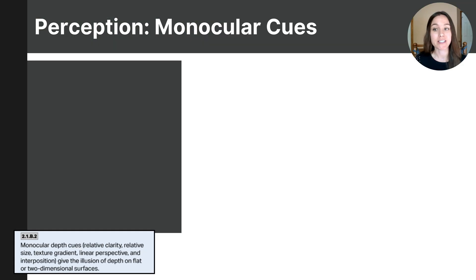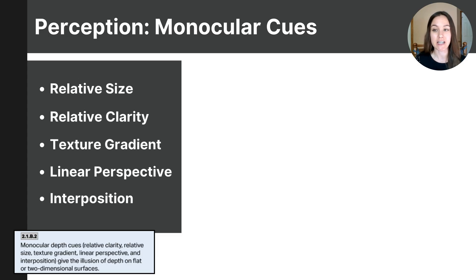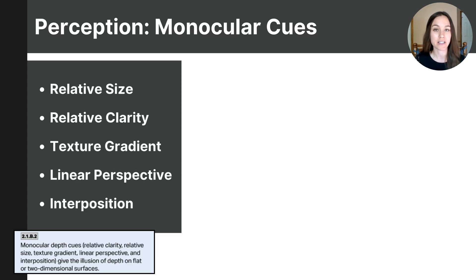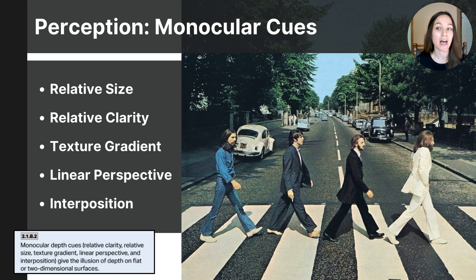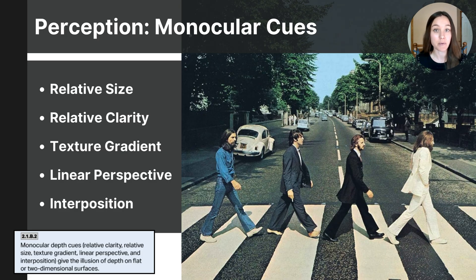The College Board wants students to identify five monocular cues: relative size, relative clarity, texture gradient, linear perspective, and interposition. Let's use the iconic photograph of Abbey Road and the Beatles crossing the crosswalk as our example to define and identify these key characteristics used as monocular cues in depth perception.